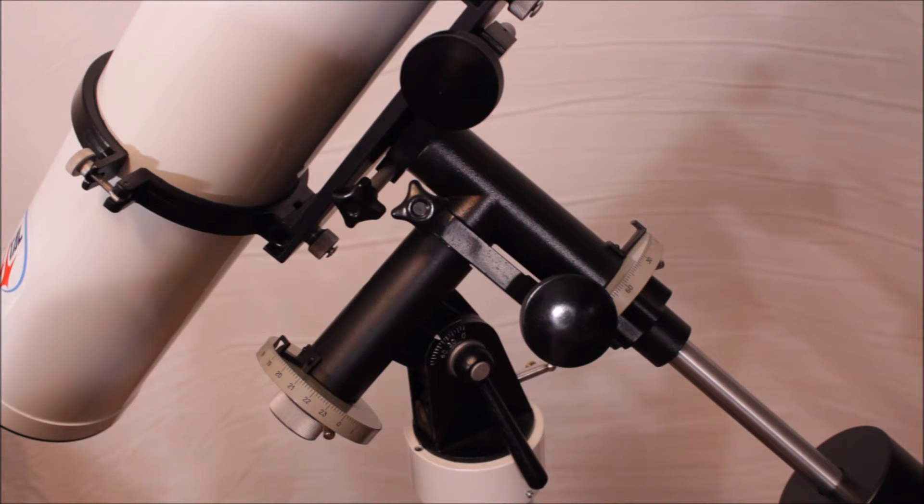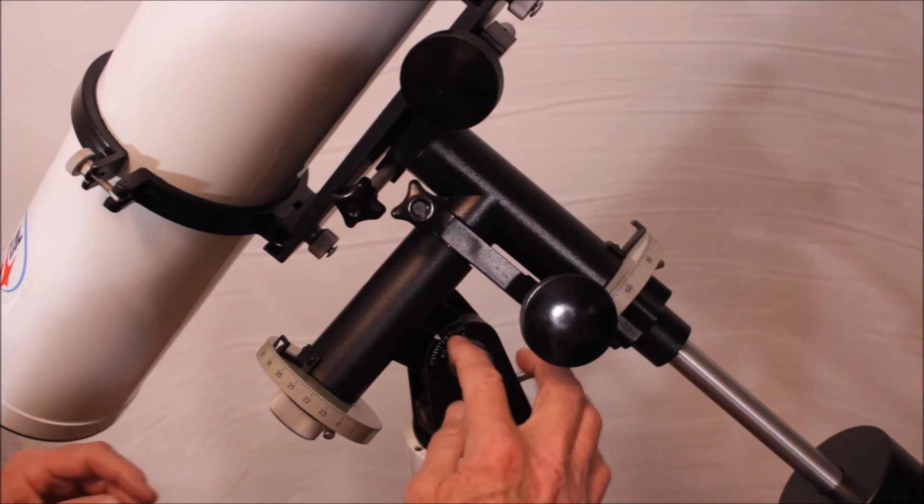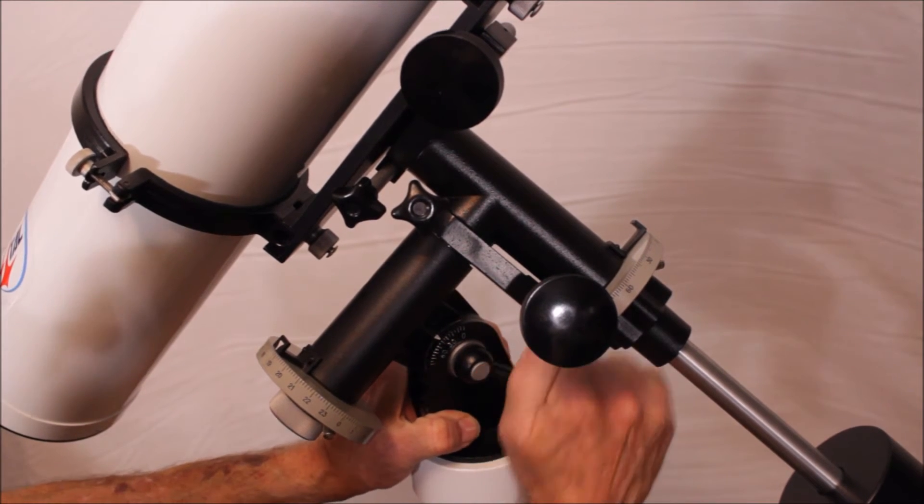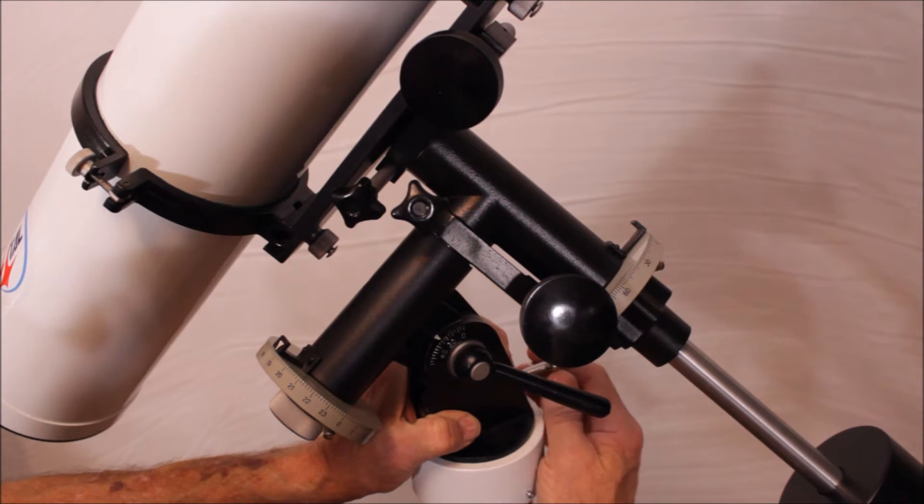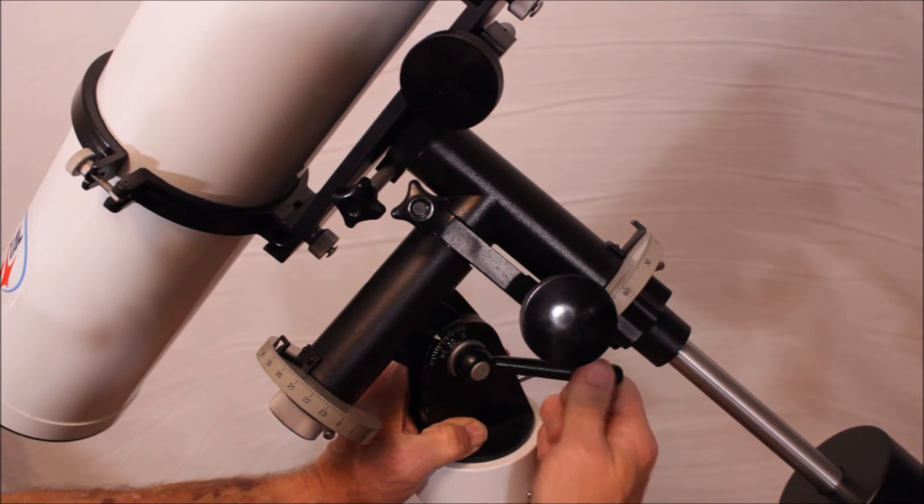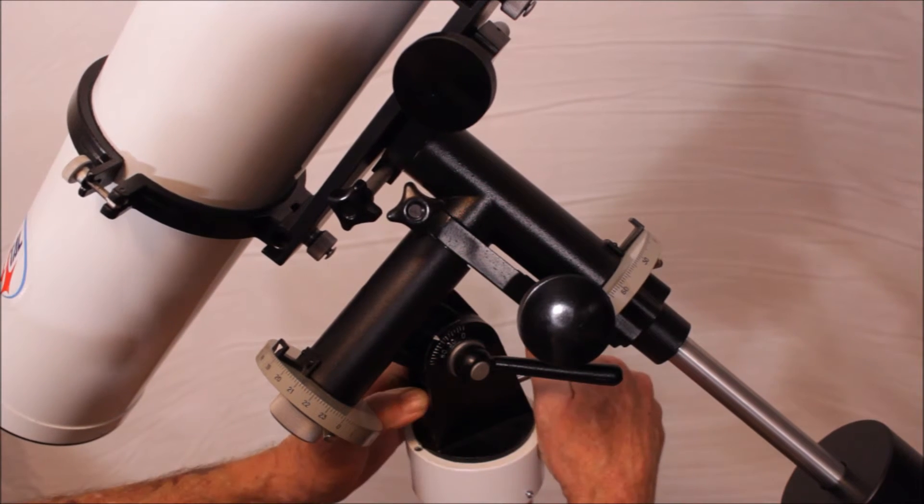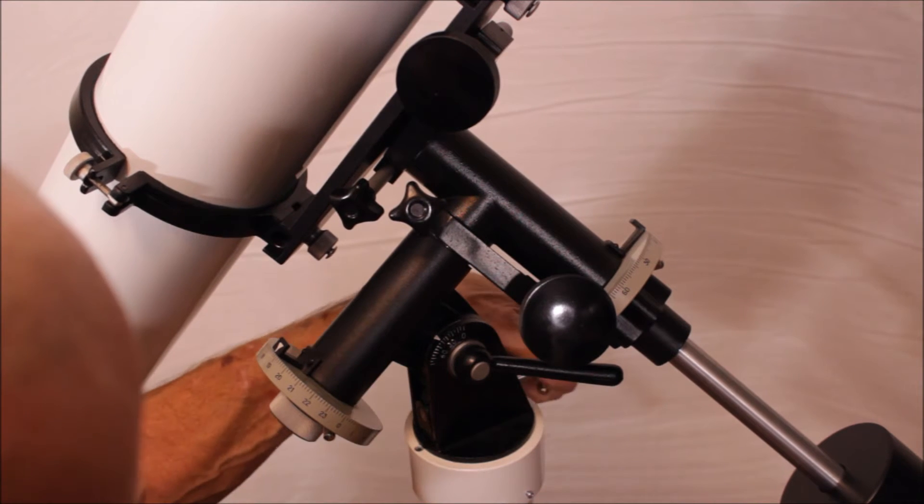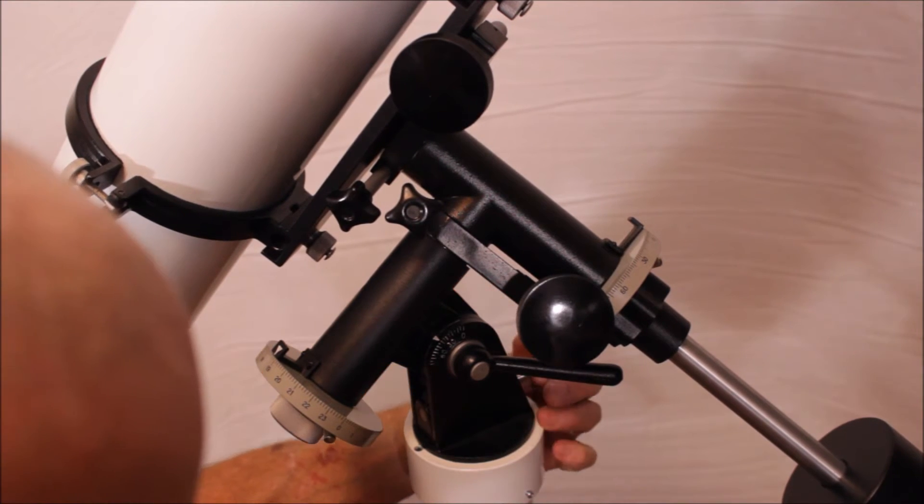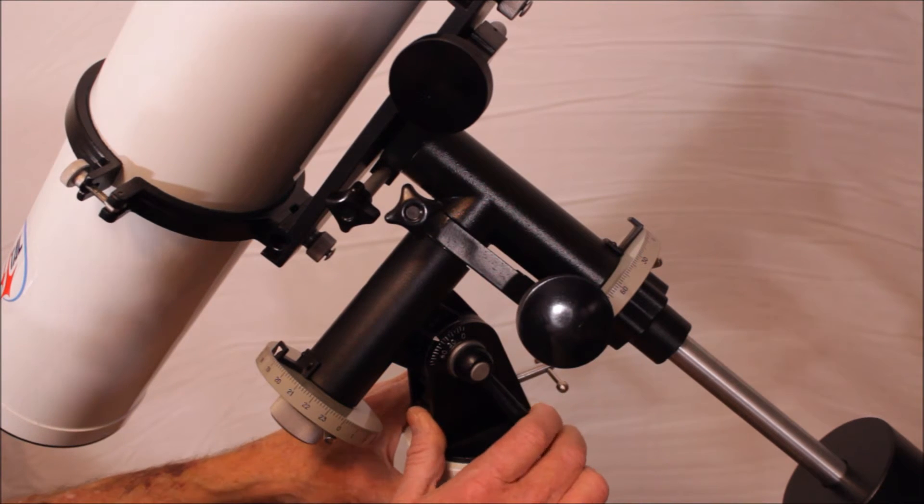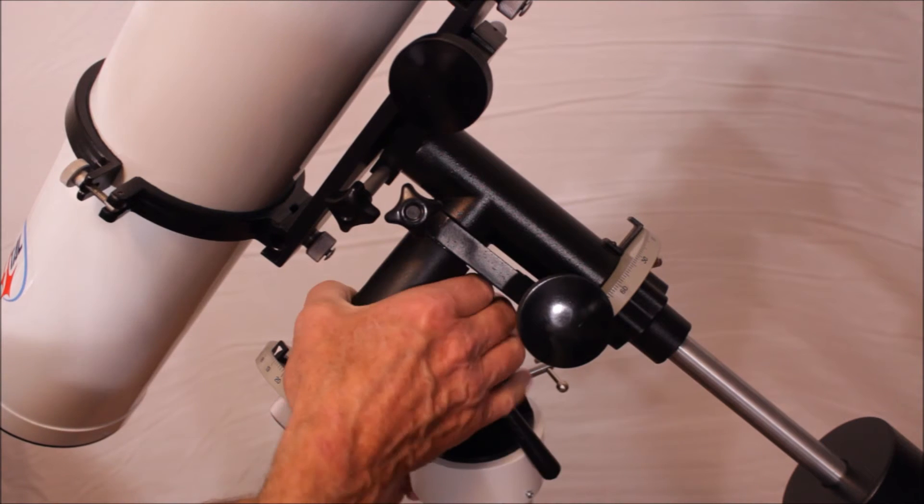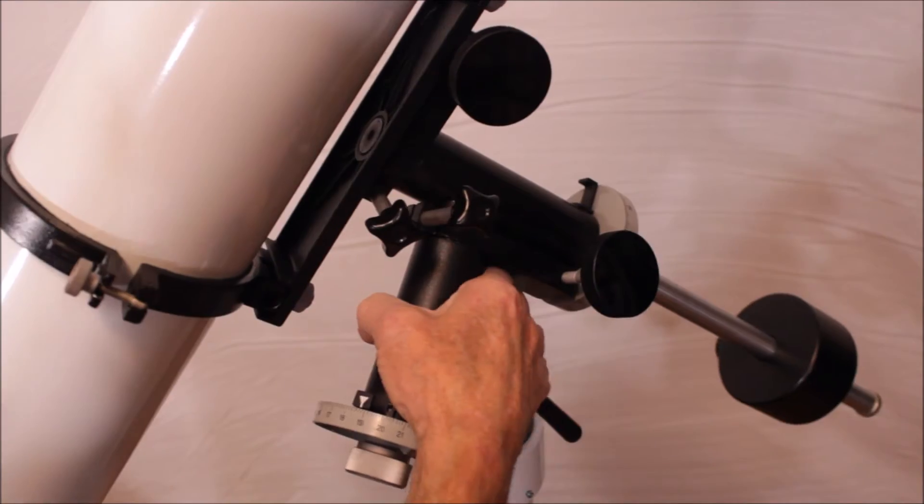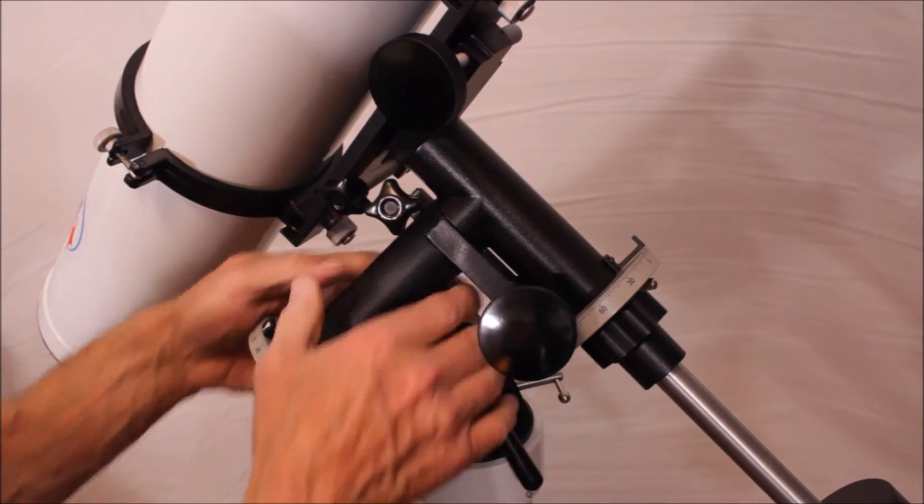Back here is the latitude adjustment device. Loosen this big beefy robust steel knob here. This thing has a little tangent screw in there, so you can adjust this very nicely to whatever latitude you need. I think you can see that. There's also a big clamping bolt here in the back.